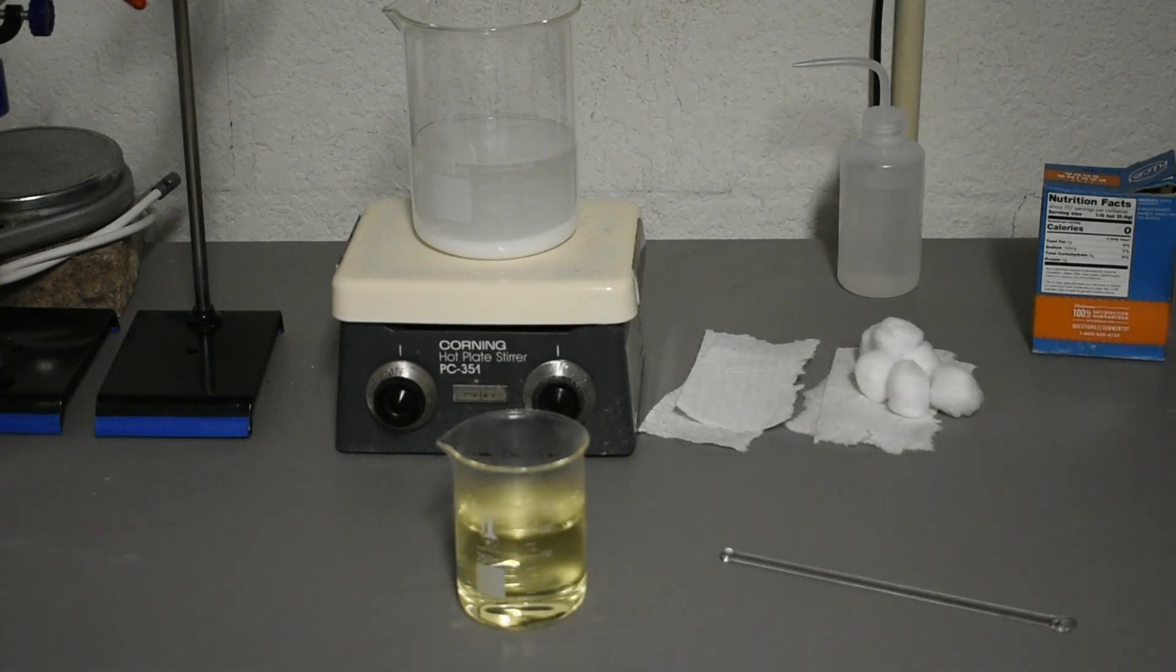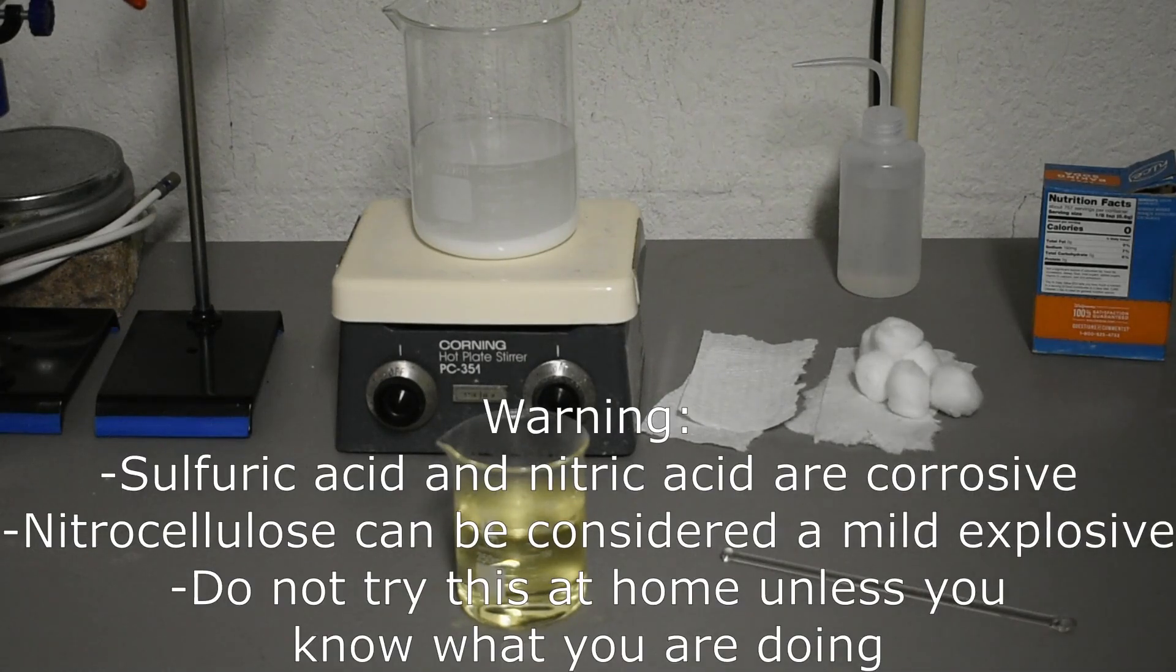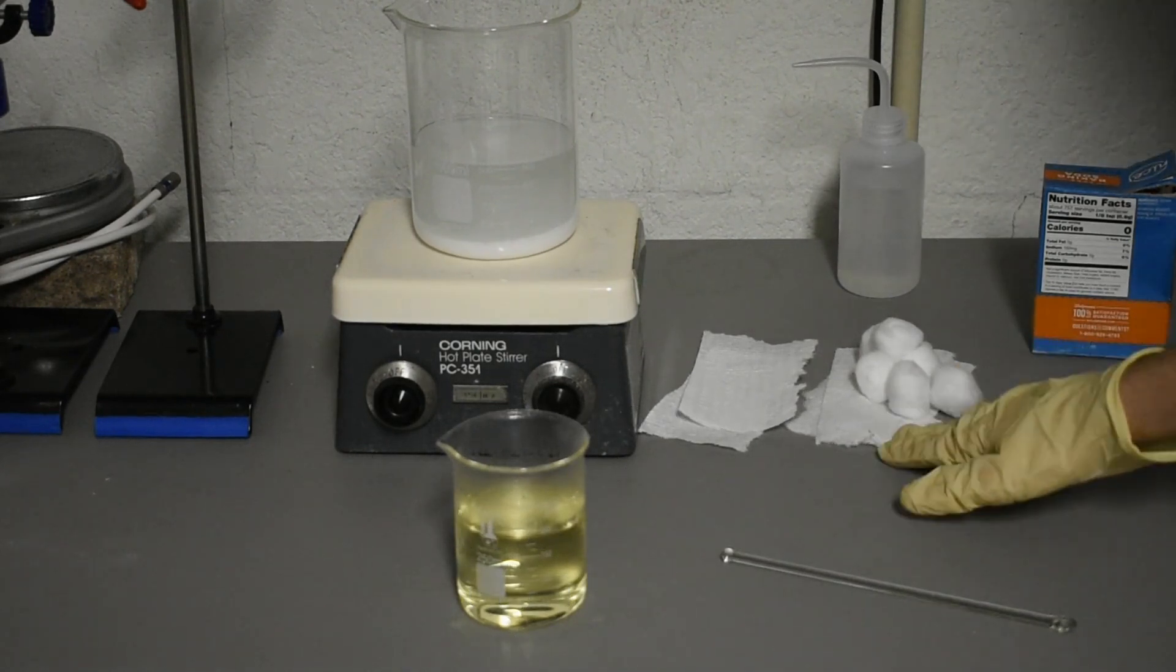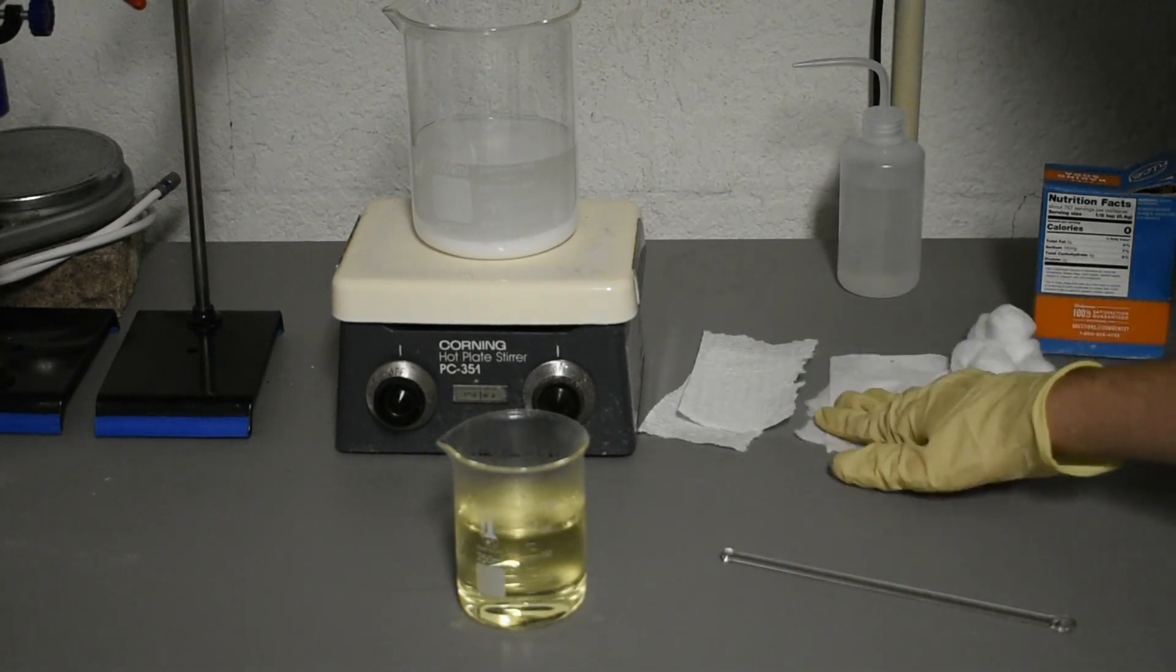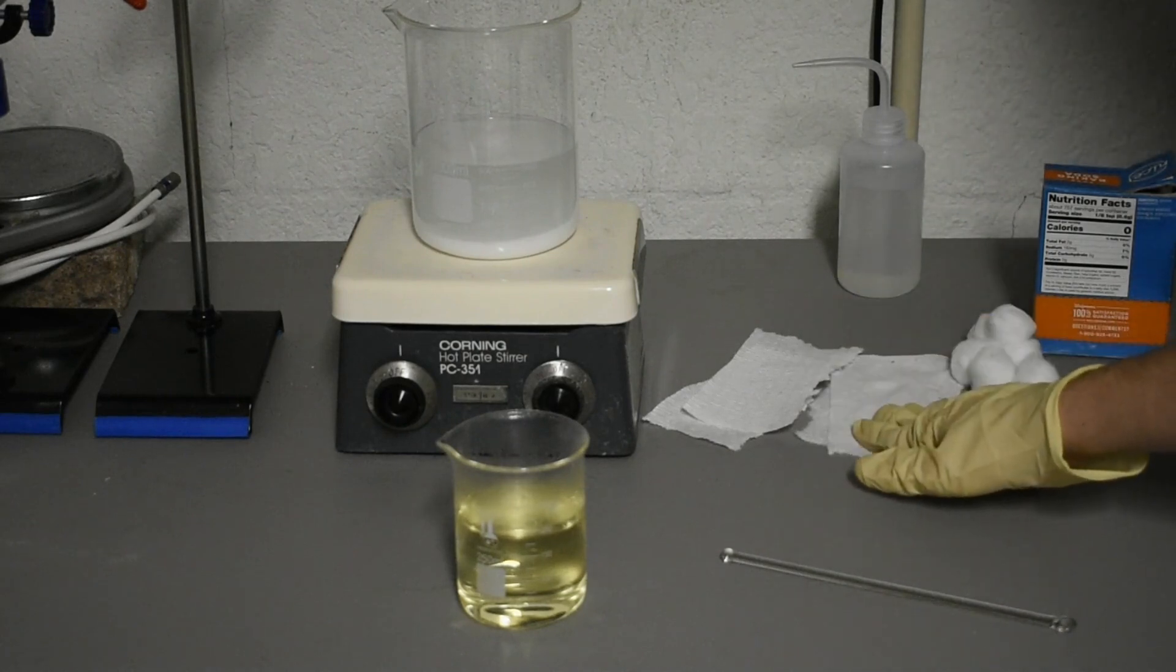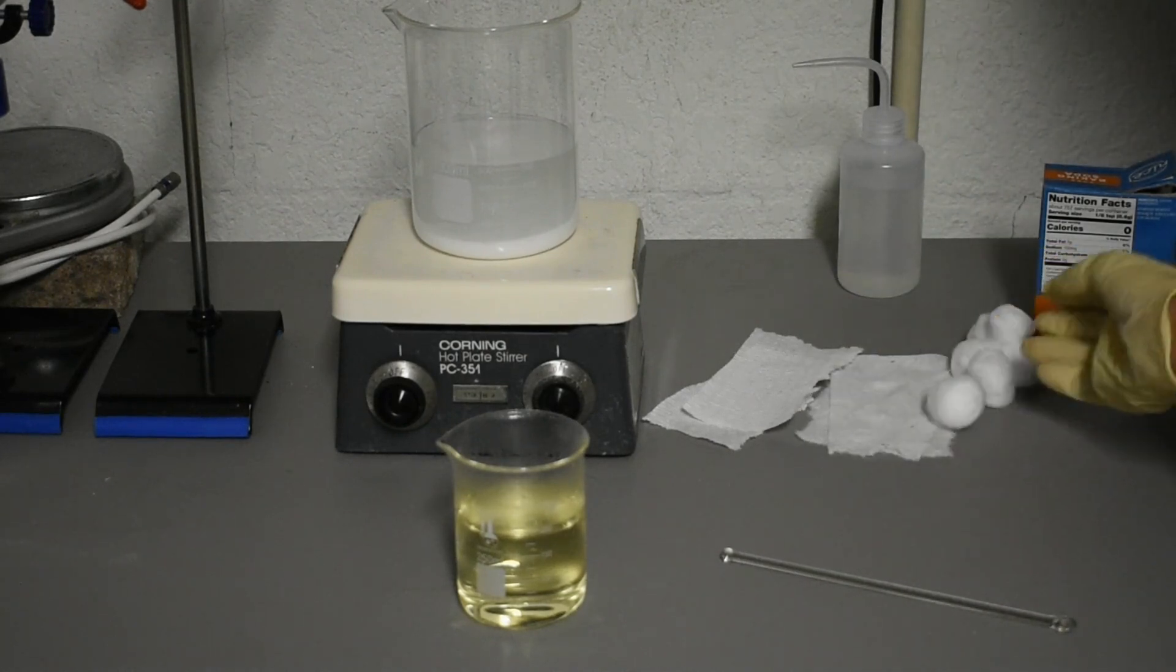All right, so today we're going to be making some nitrocellulose by nitrating a selection of materials I have here. I have two brands of paper towel to see if they actually burn differently, and then some cotton balls.